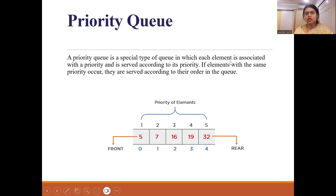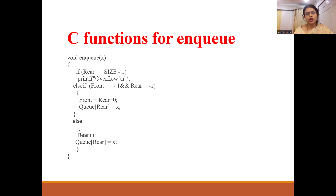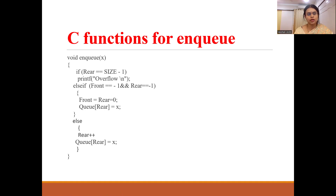In the priority queue, it is a special type of queue in which each element is associated with a priority. There are two types: ascending order and descending order, where the highest priority is given depending on the type. For the enqueue function: first check the overflow condition — if rear equals size minus one, that is overflow. Otherwise, if front equals minus one and rear equals minus one, the queue is empty, so set both pointers to zero and insert the value. If elements already exist, simply increment rear and insert.